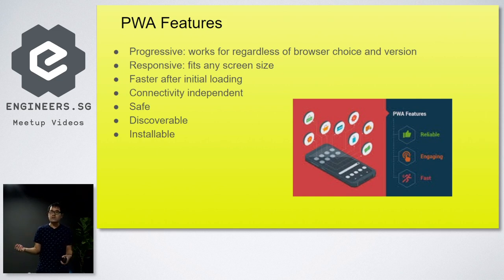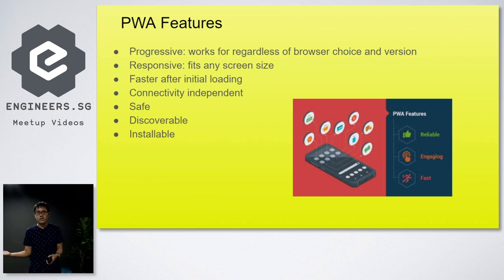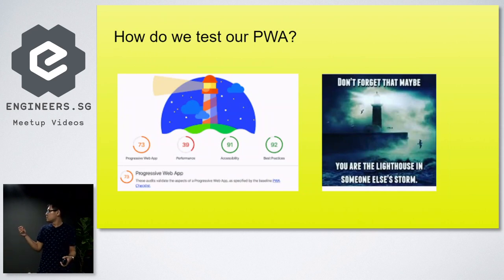It's connectivity independent, which means it can run on offline pages and on very low connection quality. It's also safe, discoverable, and you can install it like an app. So how do we test our progressive web application? We can use Google's Lighthouse to test the performance of how our application is working.